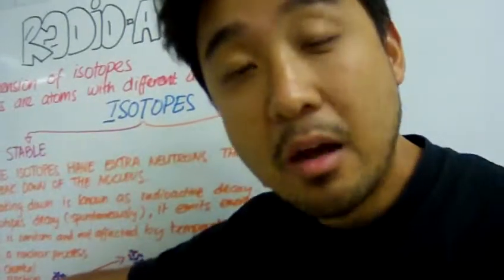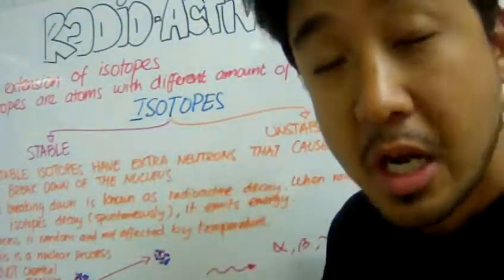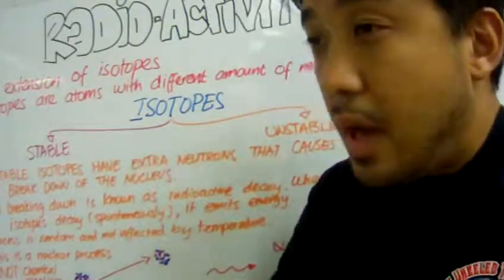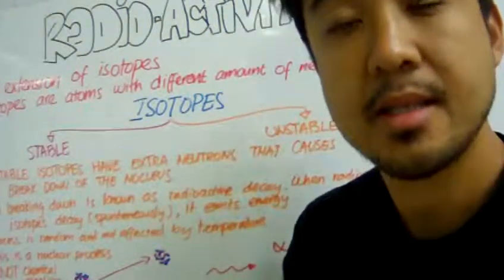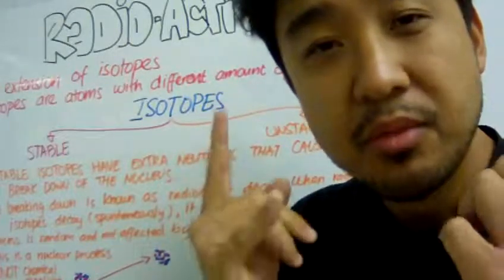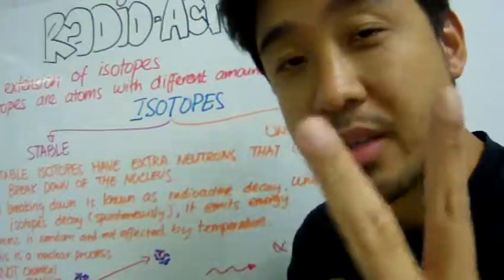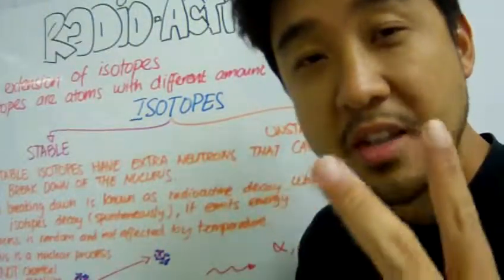It turns out in nature, atoms of the same kind that have different masses can be broken down into two different categories and two different isotope categories.